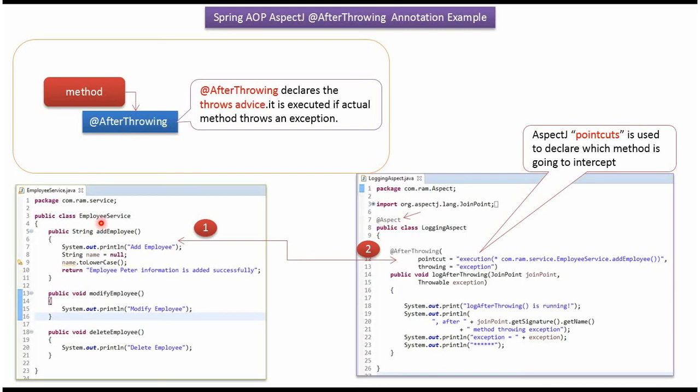Here I have defined the class EmployeeService. It has three methods: AddEmployee, ModifyEmployee, and DeleteEmployee methods. AddEmployee method throws a null pointer exception.